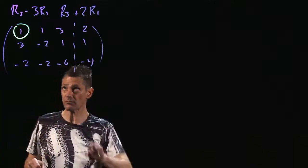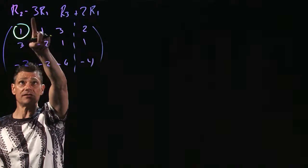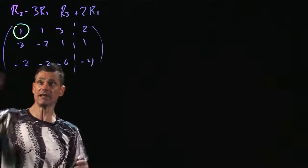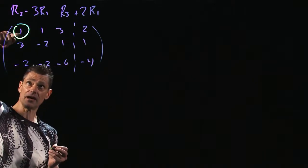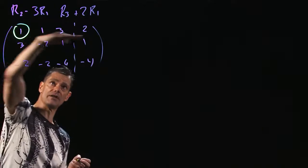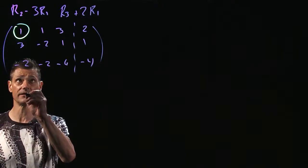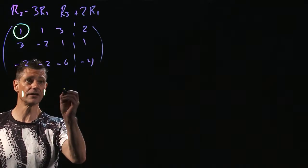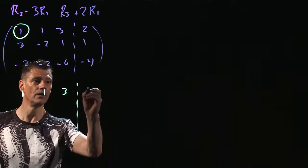We're going to take row 2 and subtract 3 times row 1 because -3 times 1 plus 3 is 0. But this is the row I'm manipulating. So I'm just going to copy it down. I'm not actually changing it.